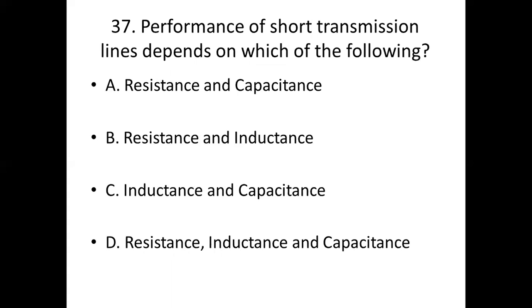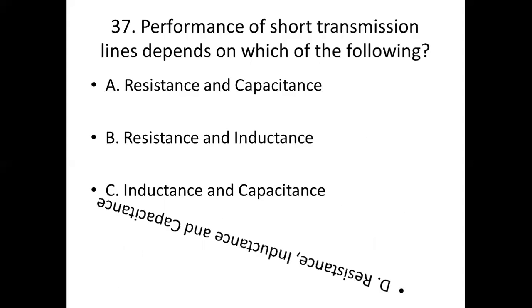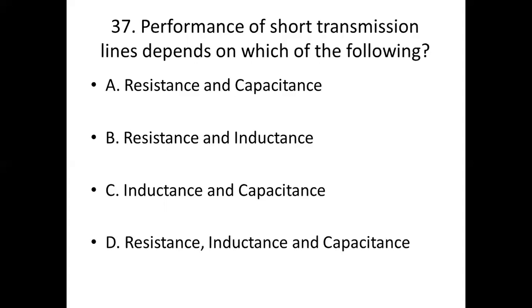Thirty-seventh bit. Performance of short transmission lines depends on which of the following? Option A: resistance and capacitance. Option B: resistance and inductance. Option C: inductance and capacitance. Option D: resistance, inductance and capacitance. Answer: Option D, resistance, inductance and capacitance.